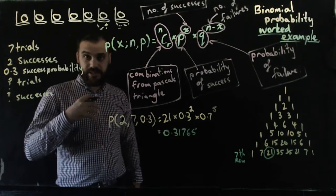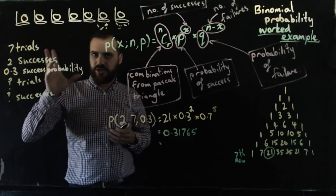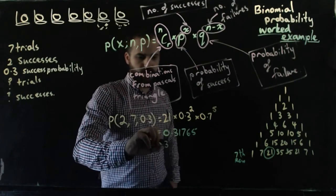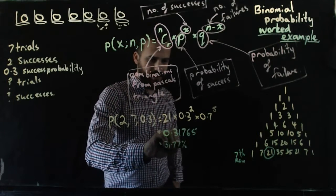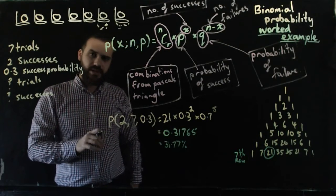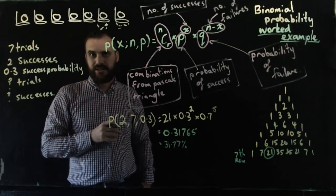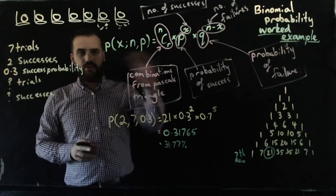Now we can probably express that as a percentage. If I give you seven shots at a basket, there is a 31.77%—I'm just rounding there—there's a 31.77% chance that you will get exactly two in the basket. That's the binomial probability. There's our worked example.